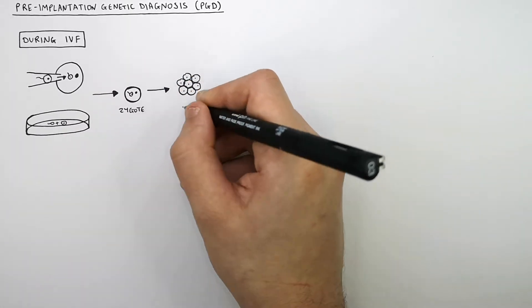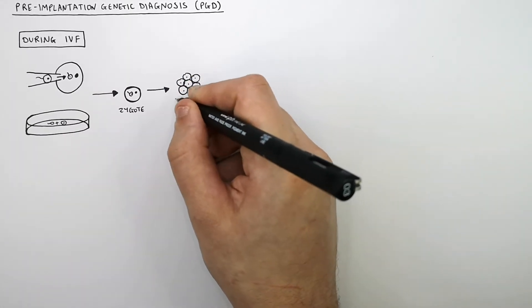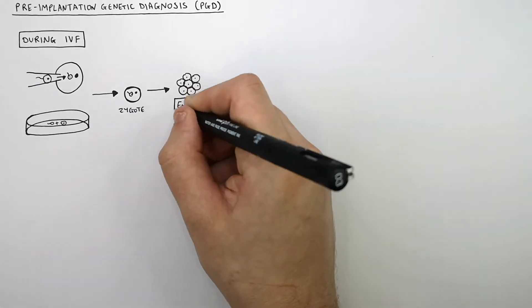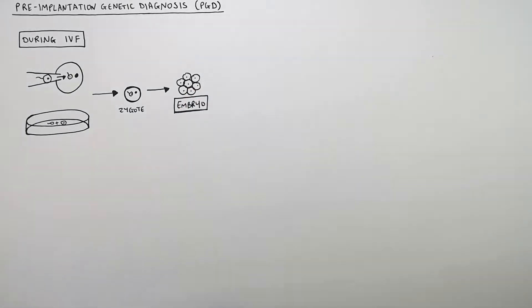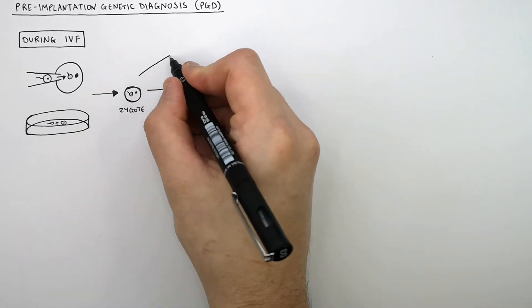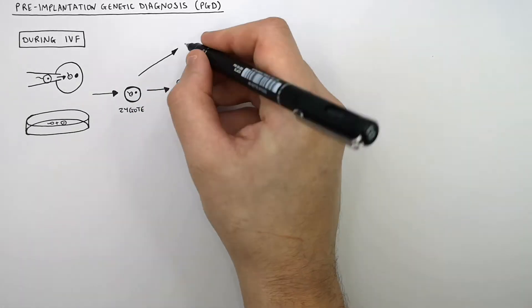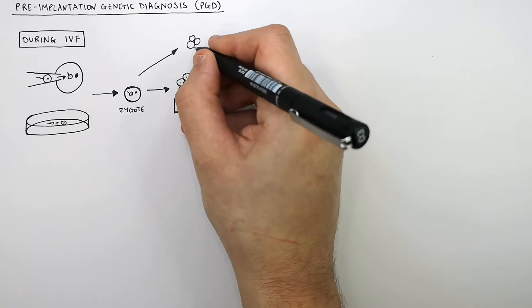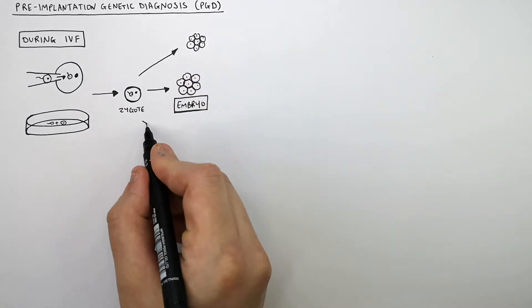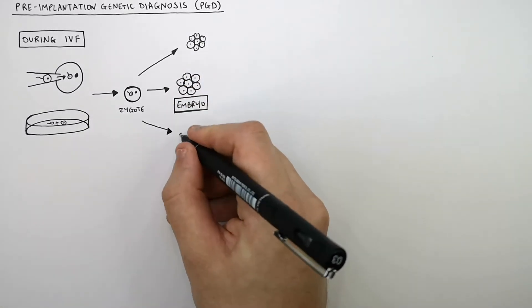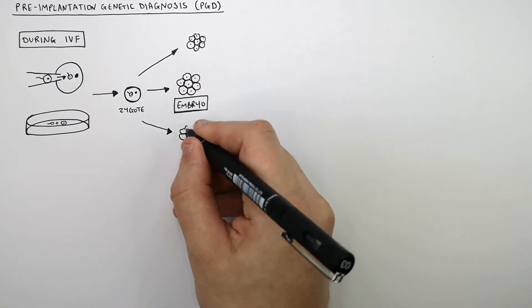The zygote is going to divide into an embryo. So this here is an embryo. But of course, during IVF, they're going to fertilize multiple egg cells to produce multiple embryos.